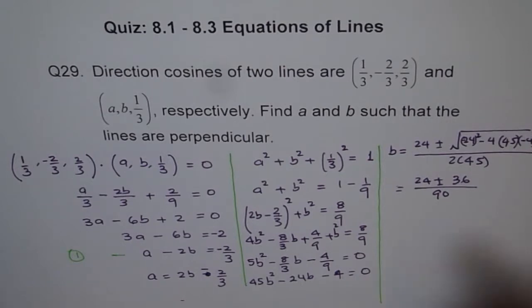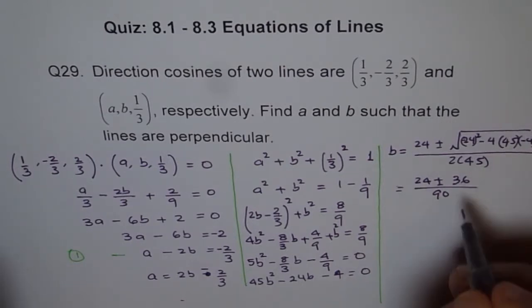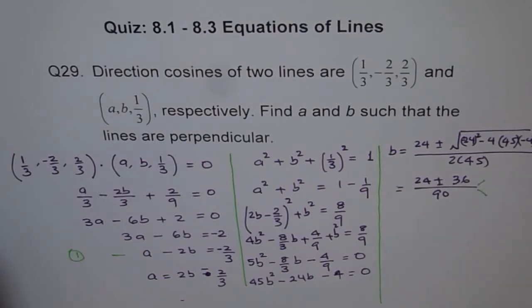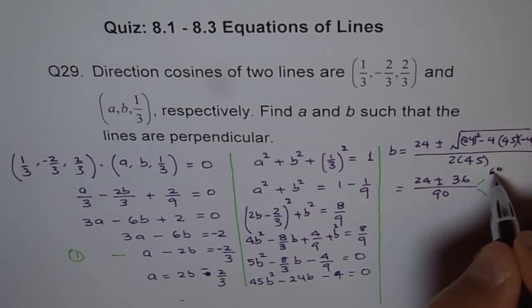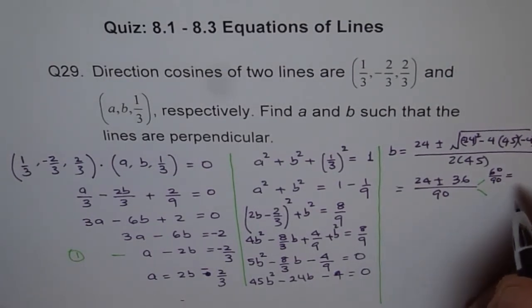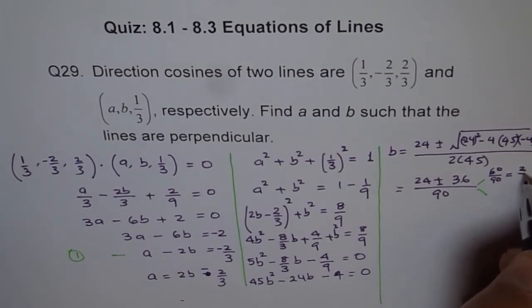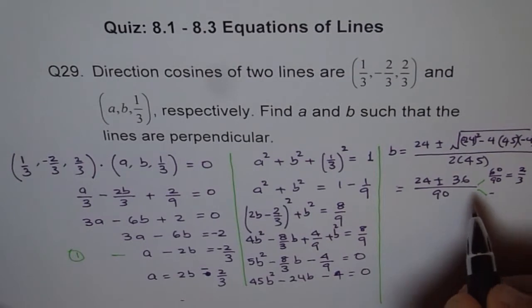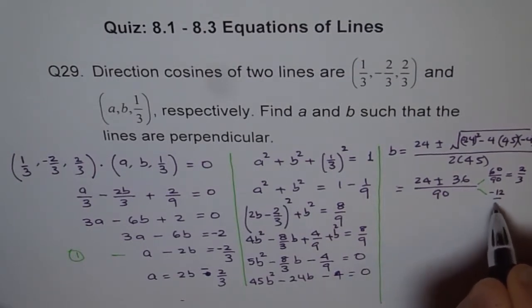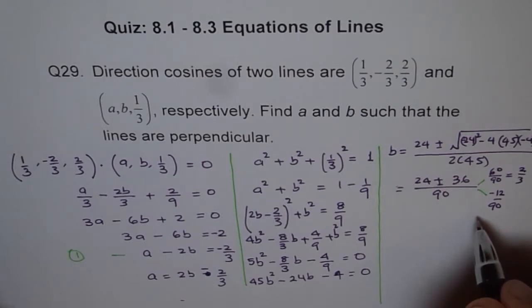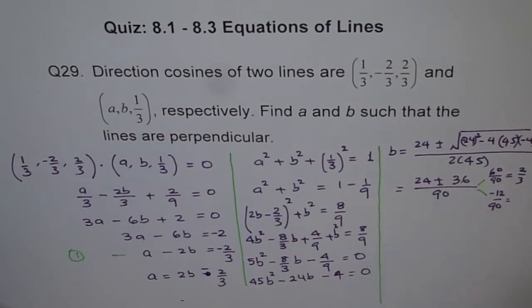Solving both cases: B = (24 + 36)/90 = 60/90 = 2/3, or B = (24 - 36)/90 = -12/90 = -2/15. Those are the two values of B.